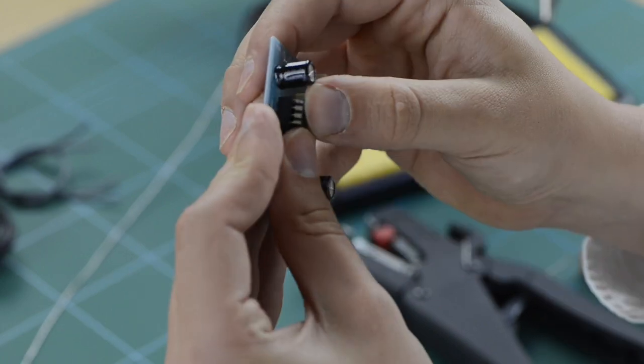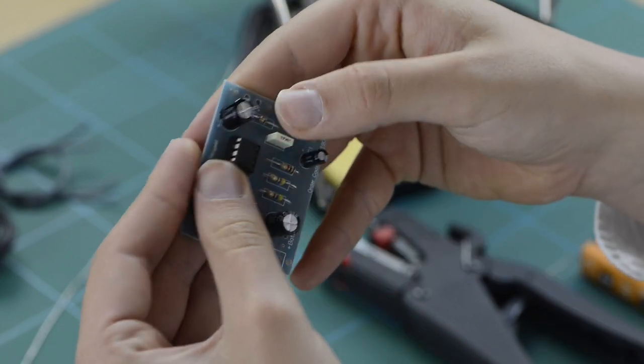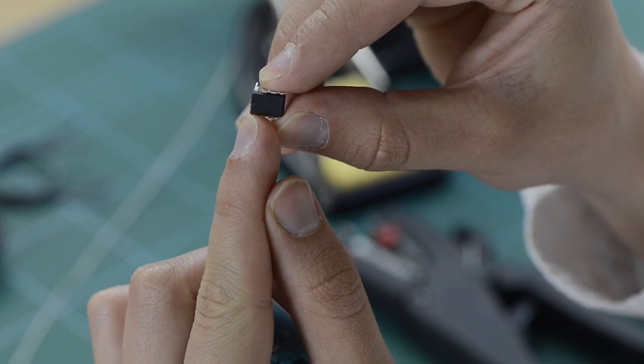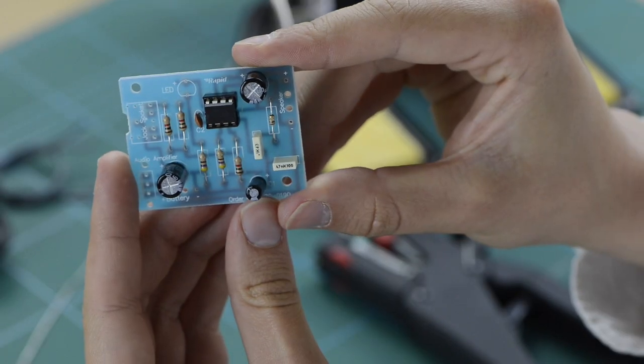Next, pick up your audio amplifier IC and press firmly into the deal socket, ensuring that the IC is mounted the correct way up and that you don't bend the legs when doing so.